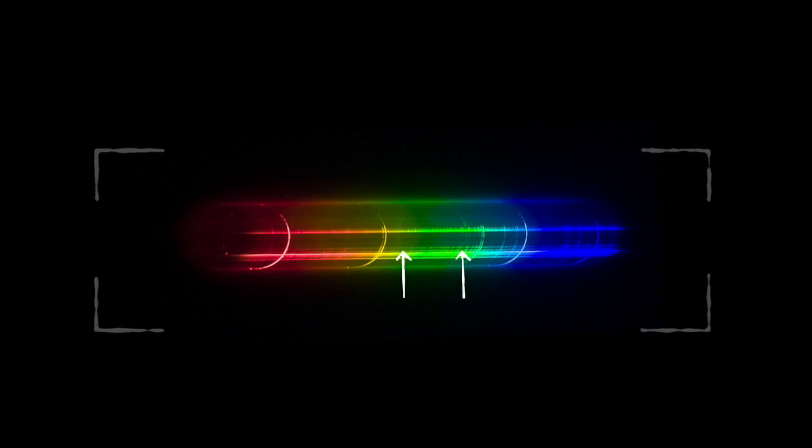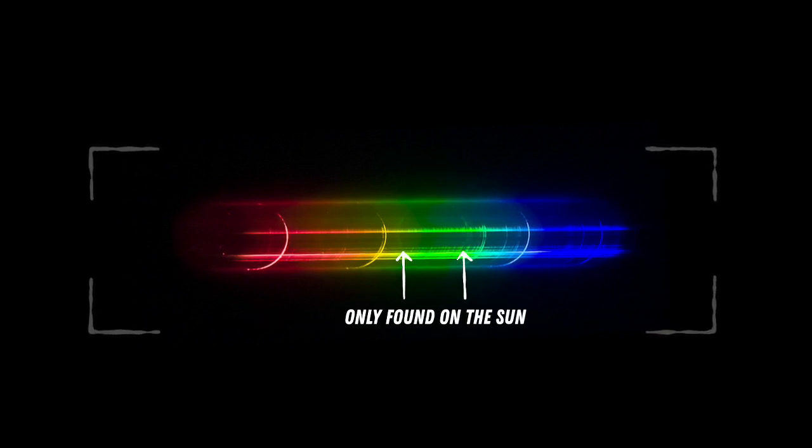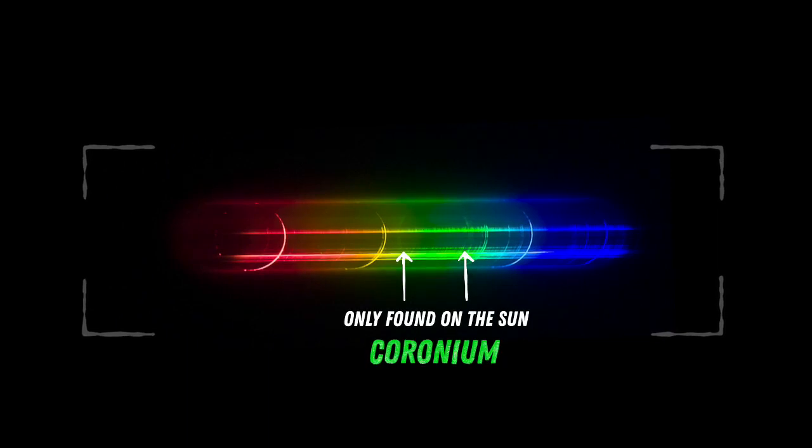As the sun's light disappeared, the pattern of wavelengths changed. They saw something they had never seen before: a bright green line that did not relate to any element found on Earth. For a short while, scientists named it coronium.